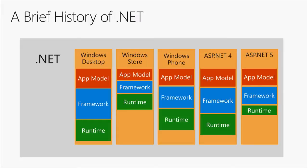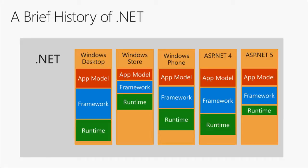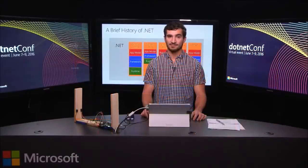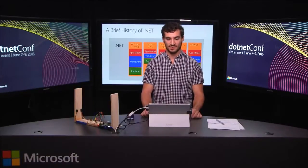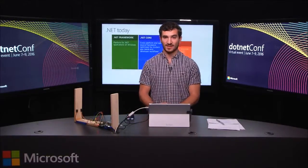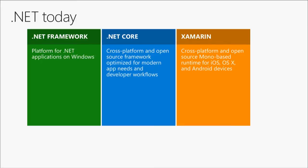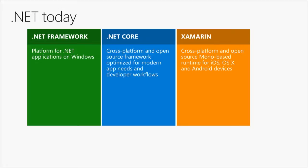.NET has an interesting history. There was a set of platforms that all ran on a separate app model, a different framework, and a different runtime. While all of these platforms had many similarities, they were still not quite the same, which made code reuse more difficult and the skills you learned for one platform did not necessarily translate one-to-one to the next. However, in 2015 we announced .NET Core. Today you have the traditional desktop .NET framework powering WPF and WinForms, .NET Core as a modular cross-platform open-source framework powering UWP and ASP.NET Core, and the Mono-based runtime for Xamarin powering iOS, OSX, and Android.